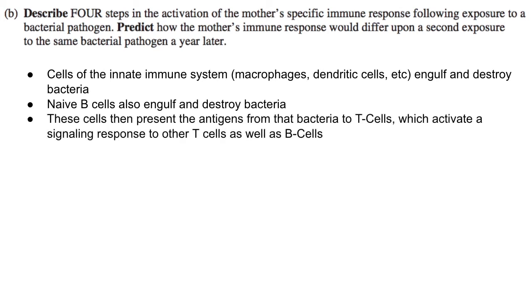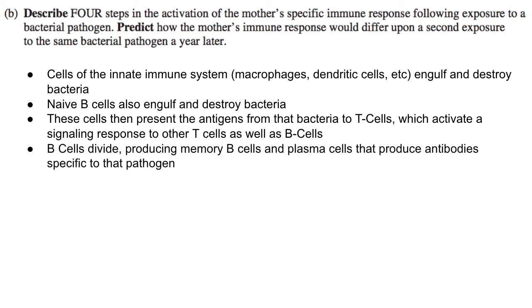The T cells activate a signaling response that carries out the rest of the primary immune response, signaling other T cells as well as naive B cells. The naive B cells produce antibodies specific to that one antigen from that pathogen. They also produce memory B cells and plasma cells, and those cells produce antibodies specific to that pathogen that bind to those antigens and signal T cells to destroy them.